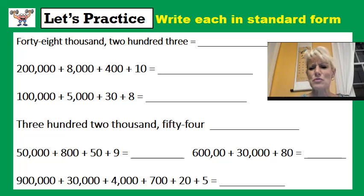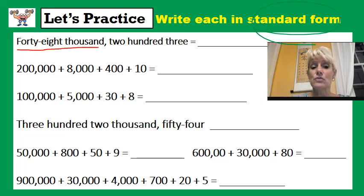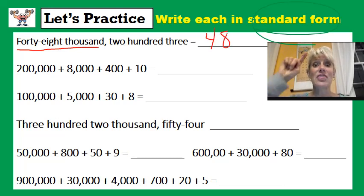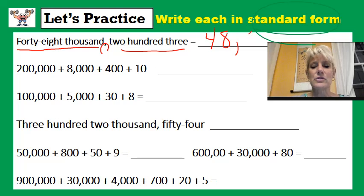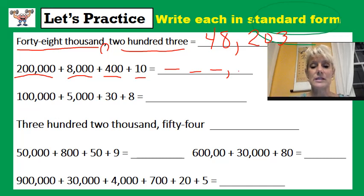It's time for us to practice. We'll do two together, and then I want you to pause and try it yourself and come back and check it. We're working in standard form — that means just how we usually see it. My number is in word form: forty-eight thousand, and then two hundred three, so forty-eight thousand two hundred three. The next one I see is two hundred thousand plus eight thousand plus four hundred plus ten. My very first number has six spaces, so I fill in six spaces: two in the hundred thousands place, and no ten thousands, so I put a zero to hold that place.